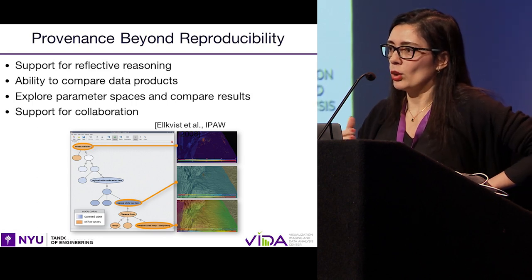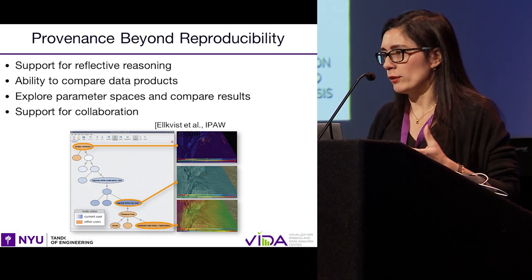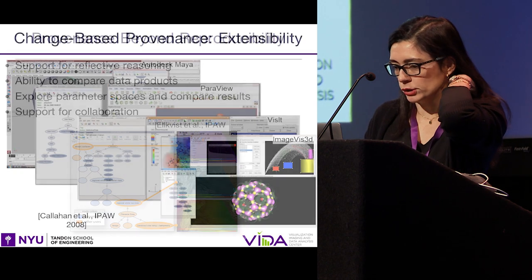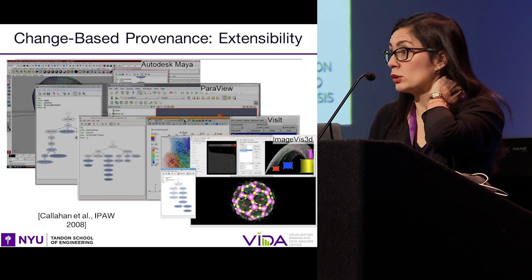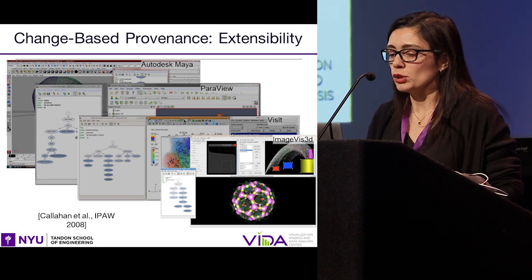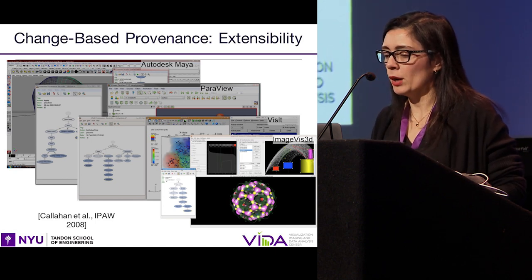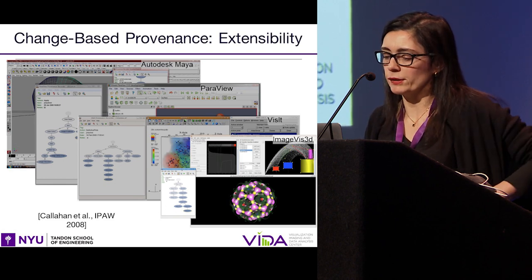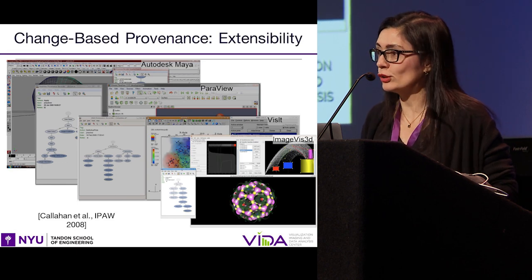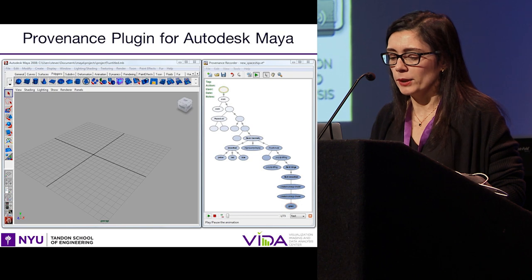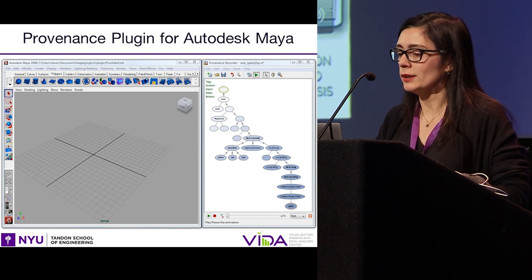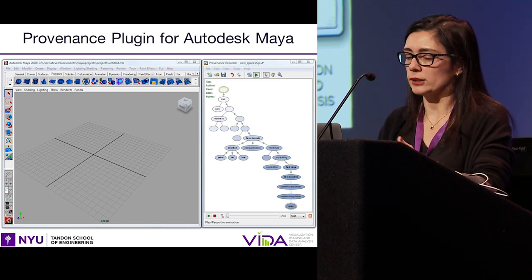Another thing we showed is that even though we use this provenance model for an exploratory workflow system, the model is extensible and can be used to instrument other applications to capture similar kinds of information. We used the same methodology to instrument Autodesk Maya, which is an interactive tool used to build three-dimensional models, widely used in the gaming and movie industries. We also did that for a couple of systems used for scientific visualizations at DOE labs, and another tool used by NIH to visualize cell data. Here's a replay of the provenance of exploration for an artist who was building the model for a plane. This was all captured while the artist was building the model, and you can replay and see step by step what the artist did.